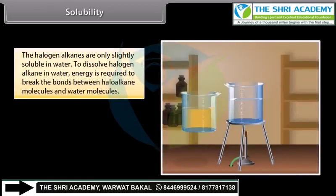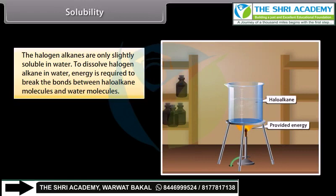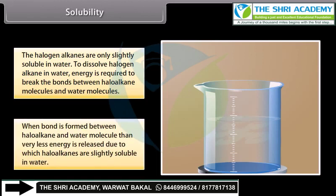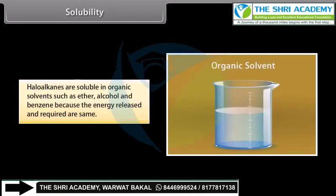Haloalkanes are only slightly soluble in water. To dissolve haloalkanes in water, energy is required to break the bonds between haloalkane molecules and water molecules. When bonds form between haloalkane and water molecules, very little energy is released, which is why haloalkanes are only slightly soluble in water. Haloalkanes are soluble in organic solvents such as ether, alcohol, and benzene, because the energy released and required are approximately the same.